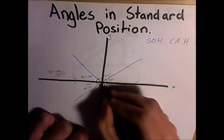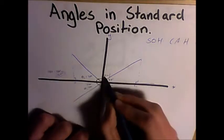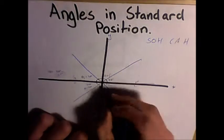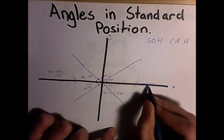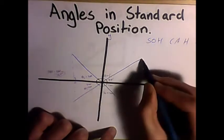First off, when we draw triangles on a Cartesian plane, one corner of the triangle will be at the origin point. We also have an initial arm along the x-axis right here, and we also have what's called a terminal arm.